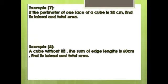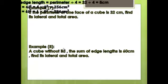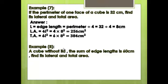Example 7: The perimeter of one face of a cube is 32 cm. Find its lateral and total area. L = perimeter ÷ 4 = 32 ÷ 4 = 8 cm. Lateral area = 4L² = 4 × 8² = 256 cm². Total area = 6L² = 6 × 8² = 384 cm².